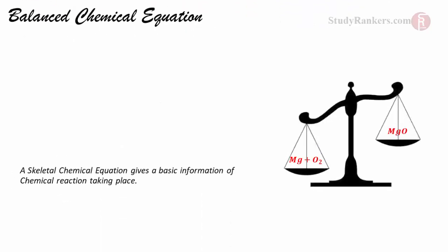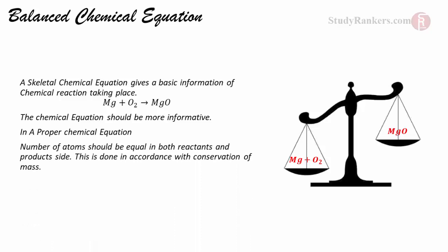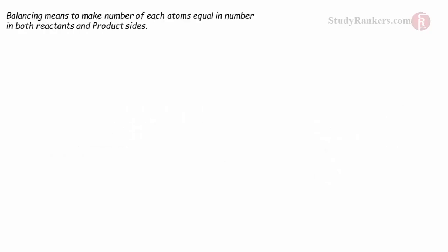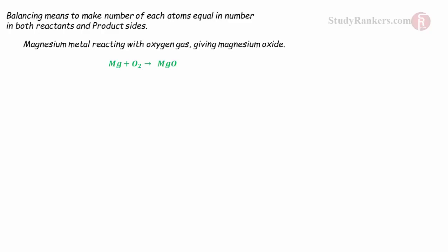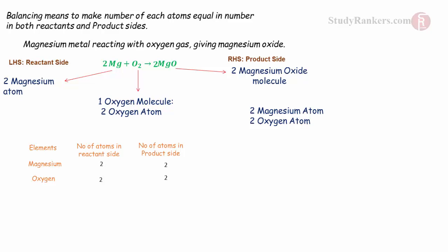But this is not a proper way to write a chemical equation. By conservation of mass, the number of atoms of each element participating in a reaction should be equal on both the reactant and product sides. The number of oxygen atoms is not the same on both sides. Magnesium is also unbalanced — it is 2 on the reactant side and 1 on the product side. If we put a coefficient of 2 to Mg on the LHS, both magnesium and oxygen are balanced.